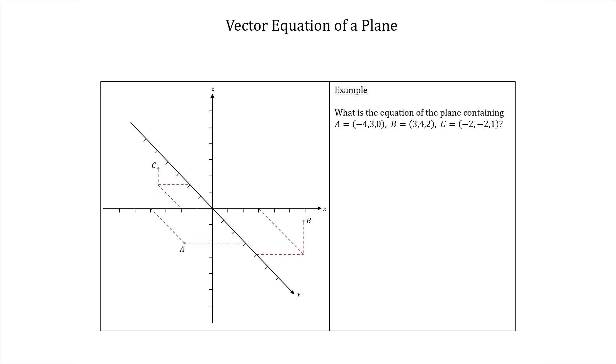To find such a vector we can take the cross product of two vectors in the plane since this would give us a vector perpendicular to both of those vectors and hence perpendicular to the plane. Clearly the vector from a to b and the vector from a to c are both entirely within the plane containing the three points.